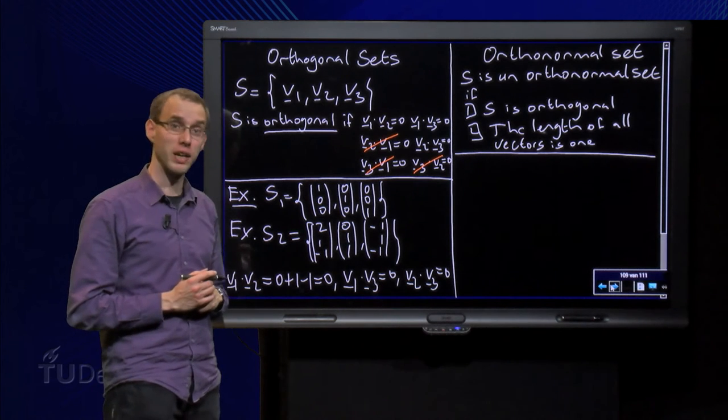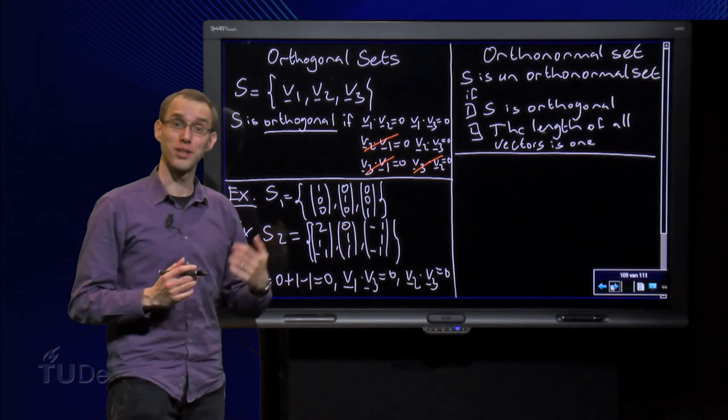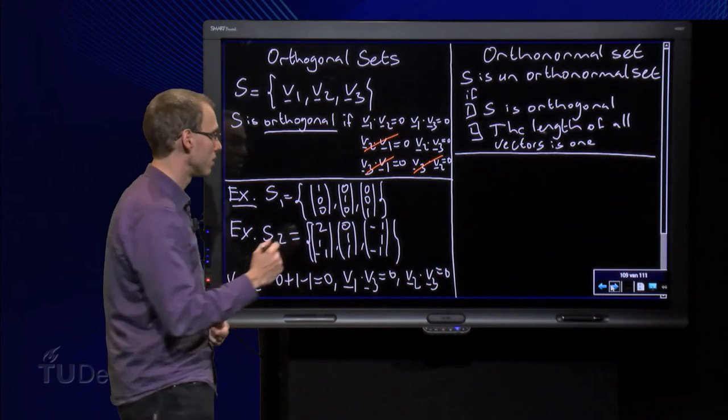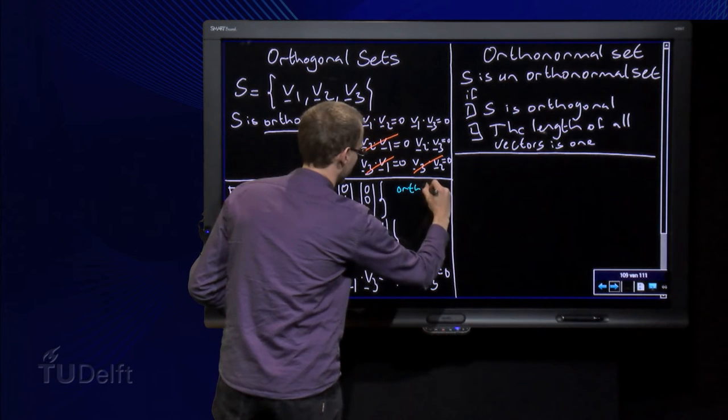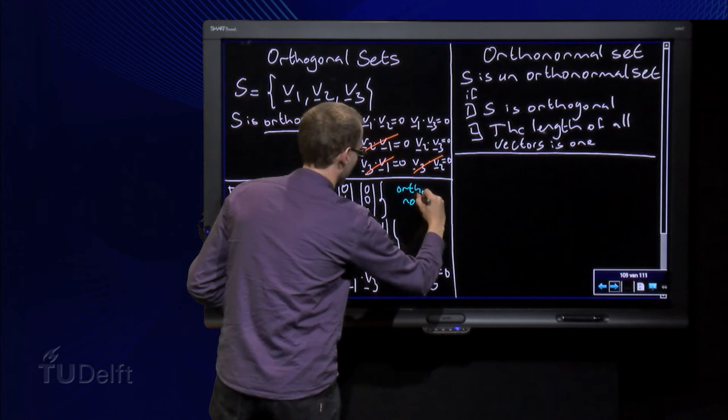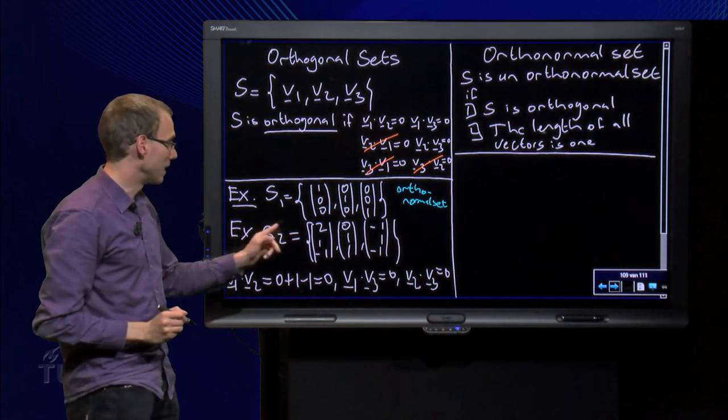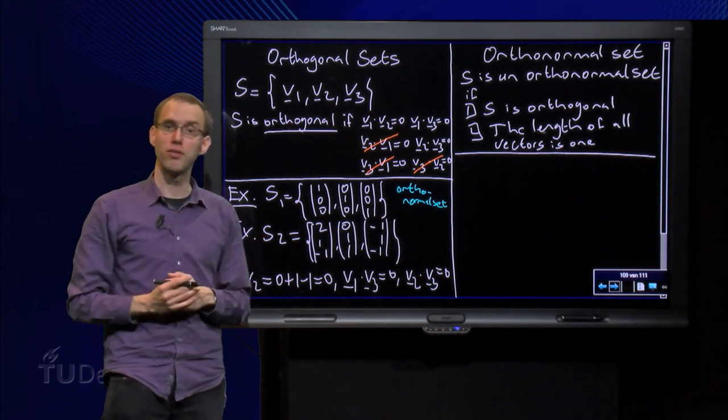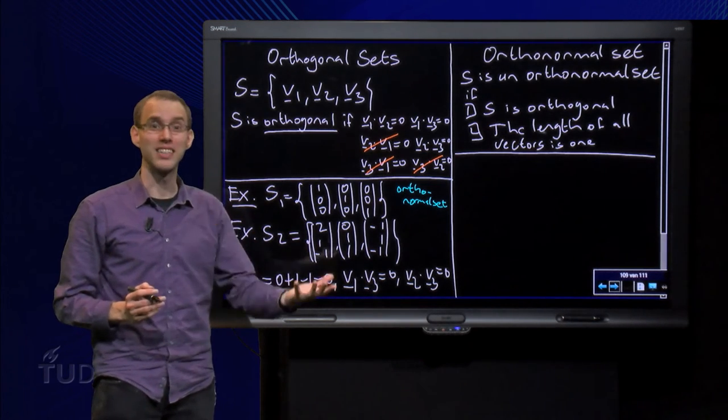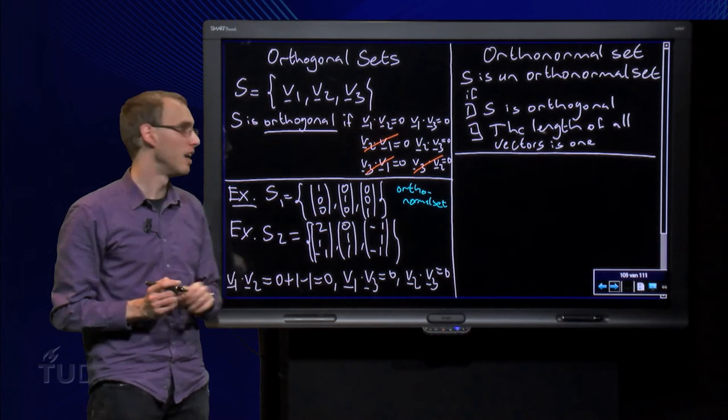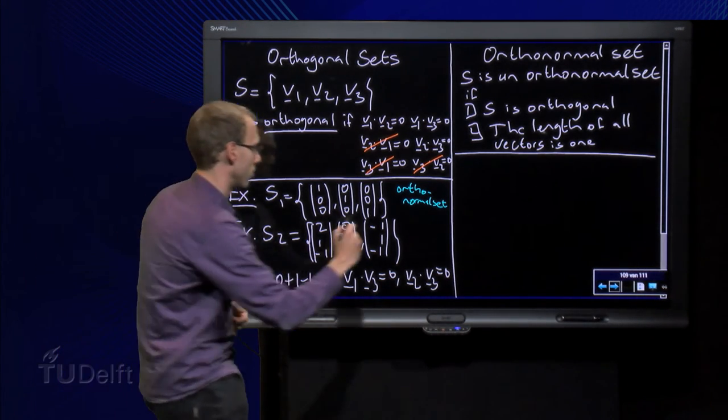Let's see at S1 and S2. We see that the length of all members of S1 are 1, so S1 is an orthonormal set. And let's take a look at S2. The length of the first vector equals 6, so the length equals the square root of 6, it is not 1, so we see that S2 is not an orthonormal set.